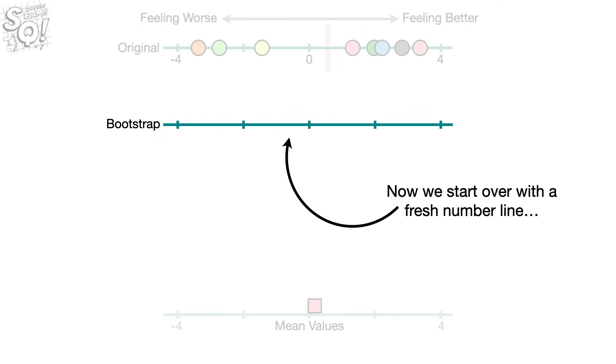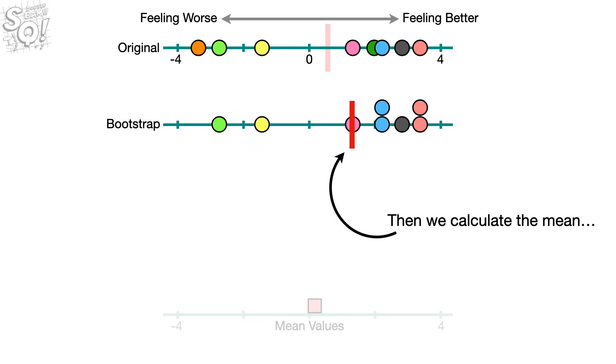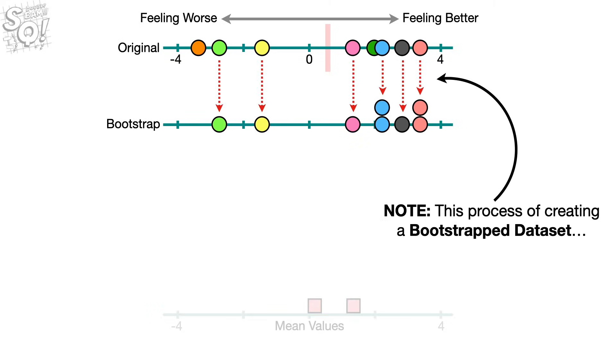Now we start over with a fresh number line, and randomly select from the eight original values for the new number line, repeating a total of eight times and allowing duplications. Then we calculate the mean, and add that to our histogram.